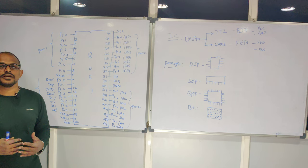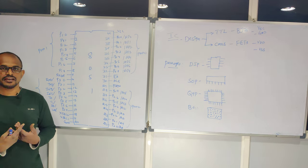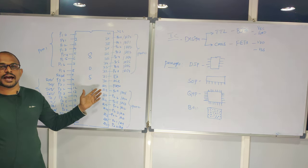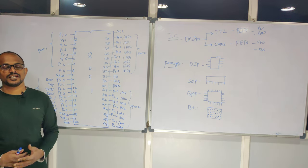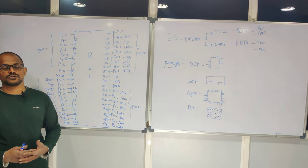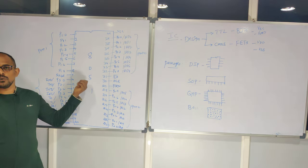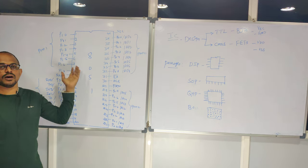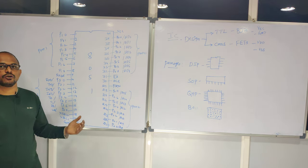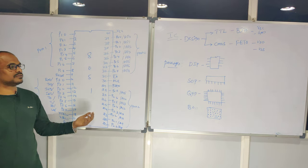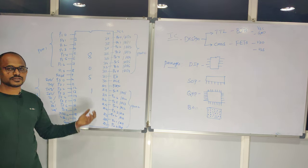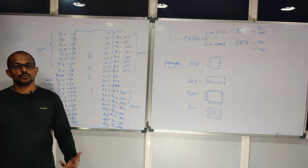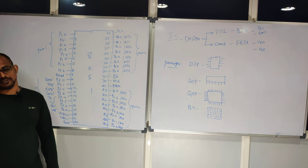Whenever you are proceeding to use the hardware for applications, you should be very clear on the pin diagram. For example, if you are trying to connect a sensor with a microcontroller, you need to know where you can connect it — whether pin number 1, 2, 10, or 20. It is very important to know what purpose each particular pin serves.